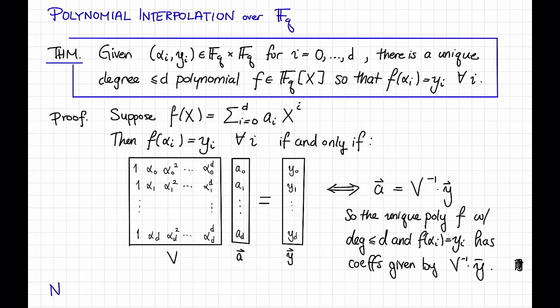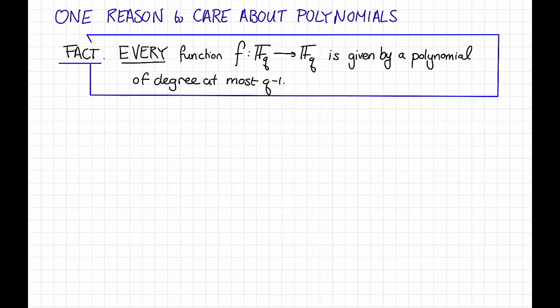Just a note. This proof actually shows that not only is there a unique such polynomial F, but actually we can find it very efficiently. All we have to do is solve a linear system. Actually, we can find it even more efficiently than that. It turns out there's a fast Fourier transform type algorithm that you can use to multiply by a Vandermonde matrix or its inverse. So actually we can find these coefficients a in time something like d log d.